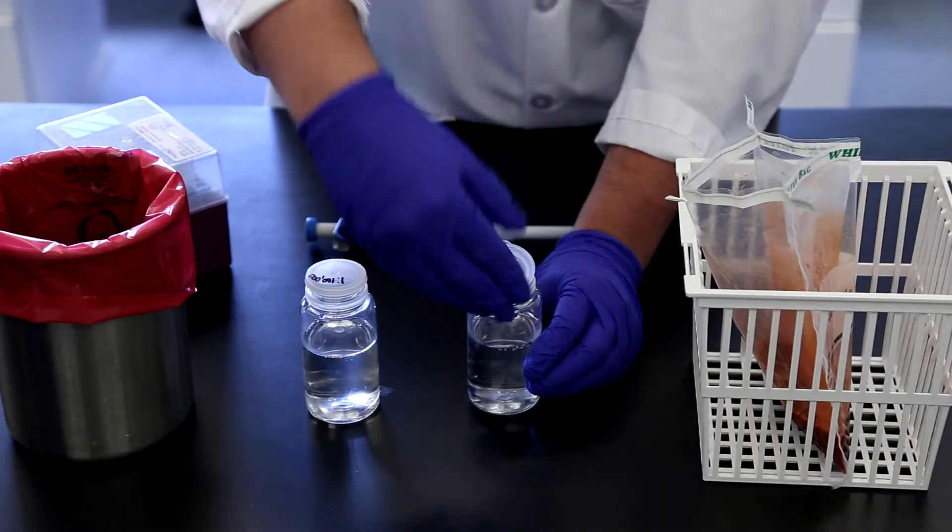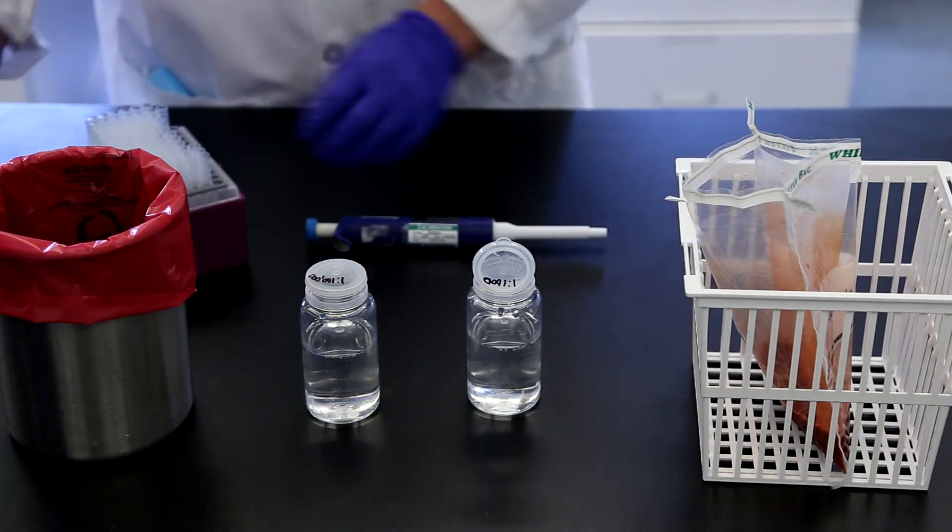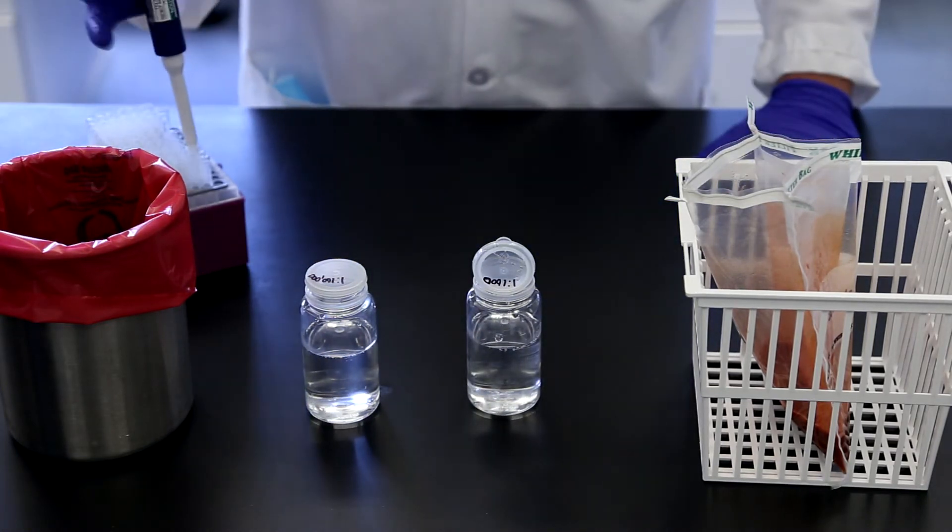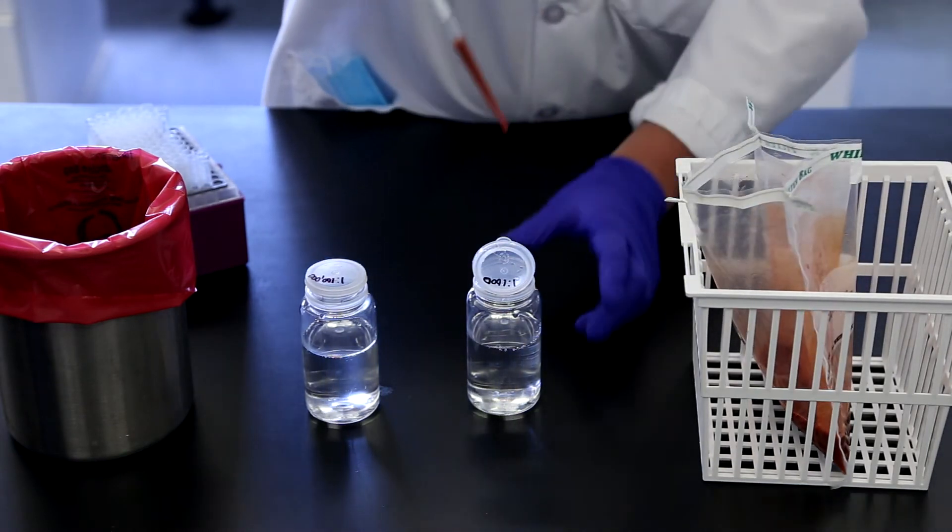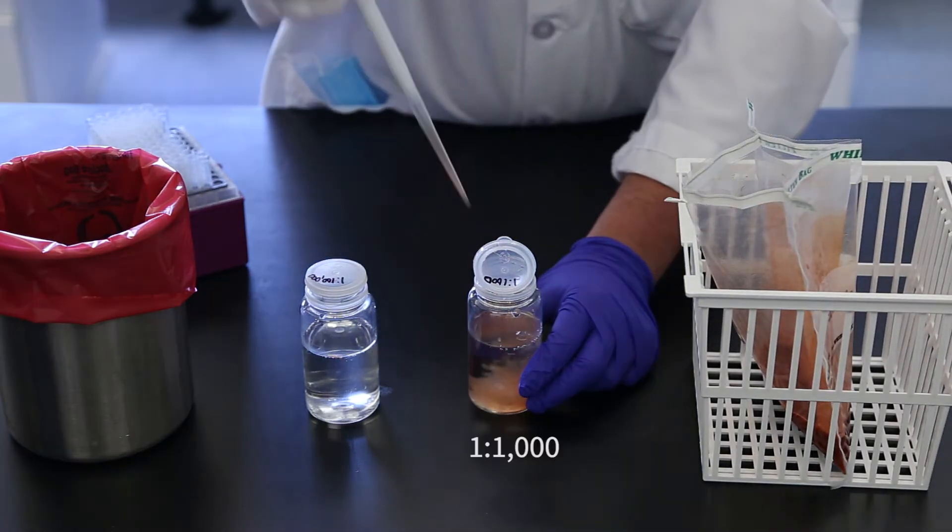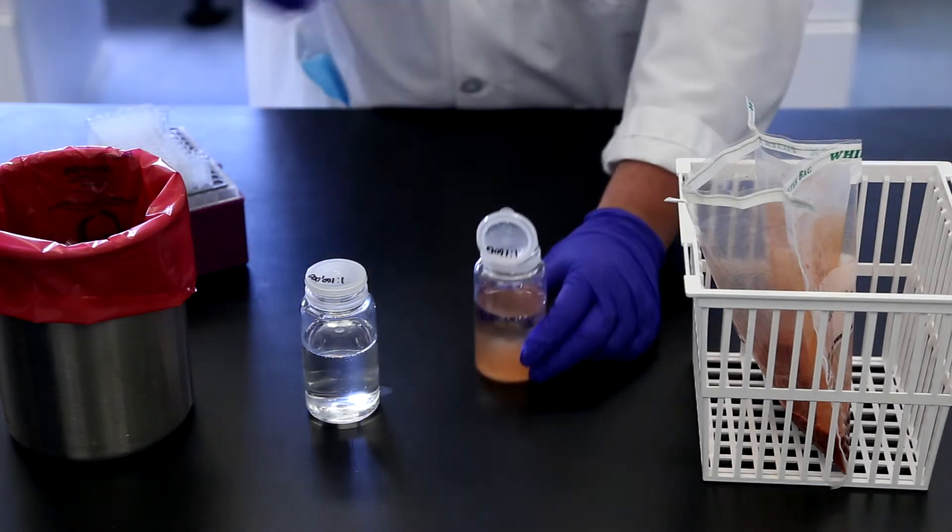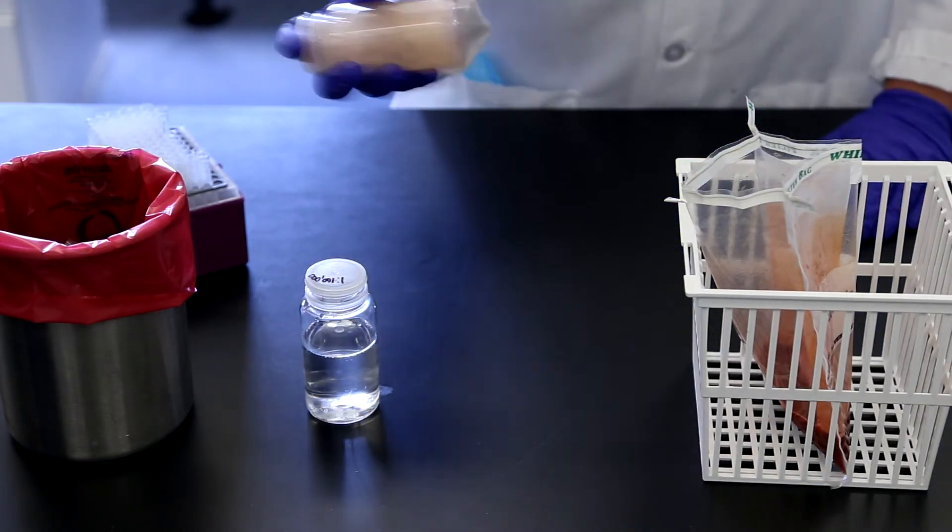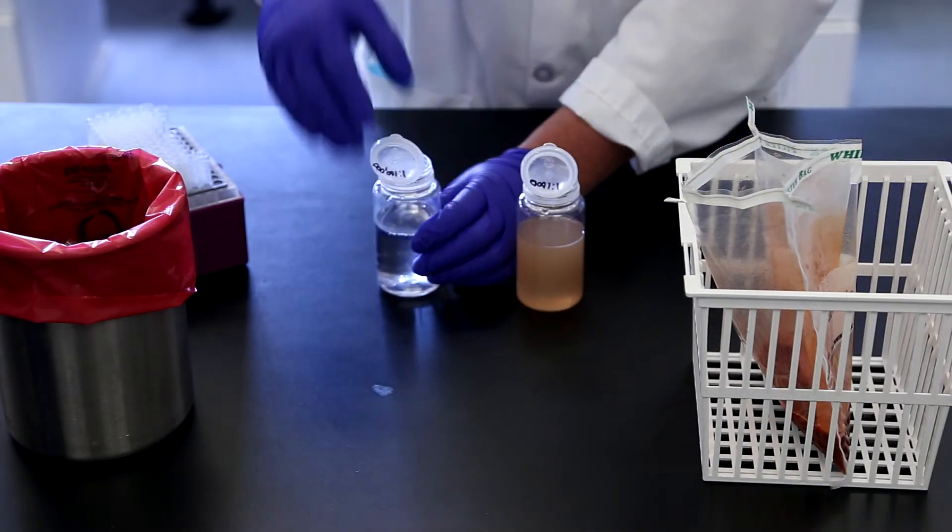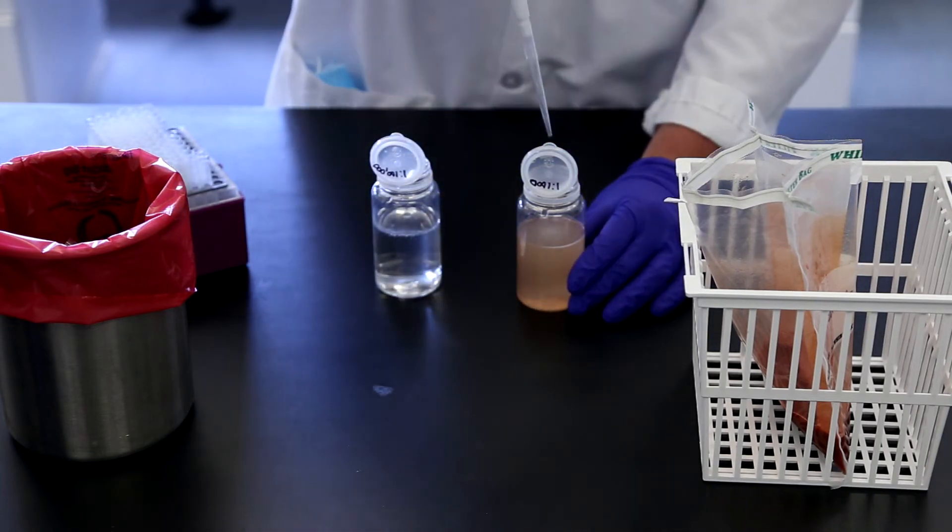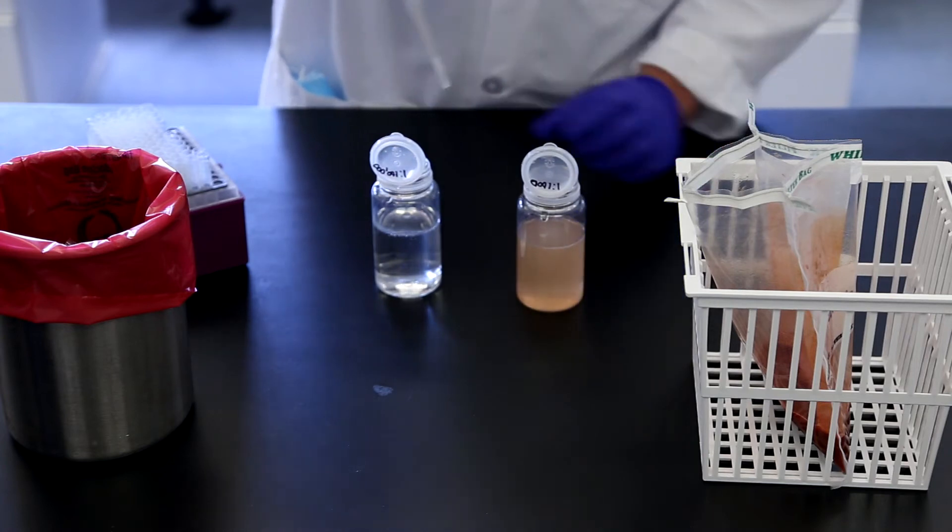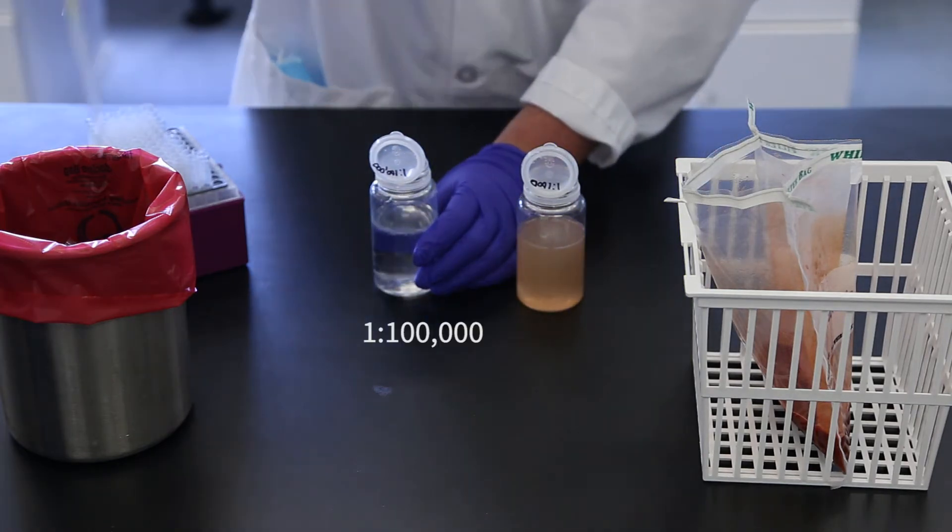Alternatively, some dilutions can be skipped to reduce materials required. For less than 1,000 CFU per gram, transfer 1 milliliter of 1 to 10 sample into 99 milliliters of buffer. For less than 100,000 CFU per gram, transfer 1 milliliter of 1 to 1,000 sample into 99 milliliters of buffer.